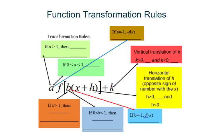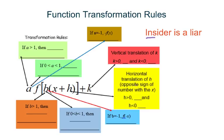Let's look at function transformation rules. First of all, remember: insider is a liar. What's the meaning of insider? Insider means those numbers with X — in other words, those numbers that have the same position as X. For example, B and H are insiders. We call A and K outsiders.